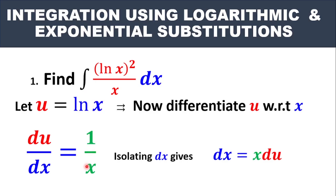The third step, as we learned, is to make dx the subject. We isolate dx by cross-multiplying, and we get dx = x dU. Having gotten this, we now know our U and we know our dx — these are the two important ingredients you need when dealing with integration by substitution.